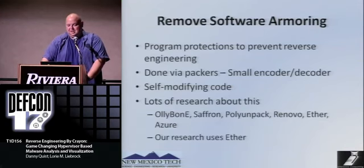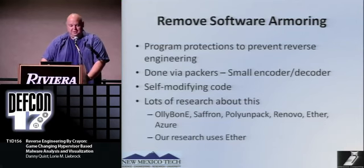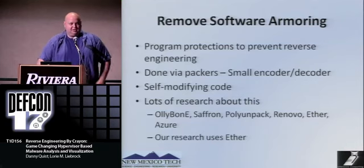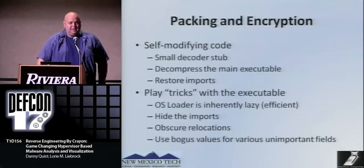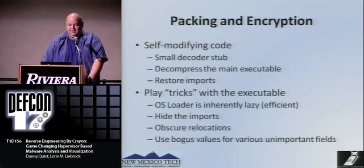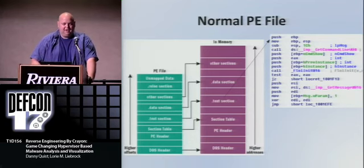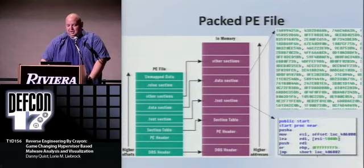Software armoring refers to protections to prevent reverse engineering, make a program smaller, or protect it in some manner. This is done via packers, which are just self-modifying code. There's a lot of research on this: OllyBone, Saffron, PolyUnpack, Renovo, Ether, and Azure. All a packer is is a self-modifying portion of code — it has a small decoder stub that decompresses the main executable, restores imports, and allows the program to execute normally. It plays tricks with the executable, doing the bare minimum to get things loaded and hiding imports. You apply a packer to a PE file and get compressed or obfuscated code with a small decoder stub.